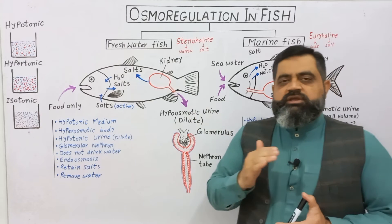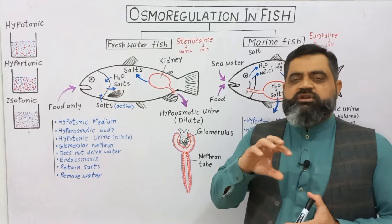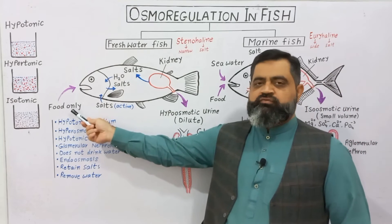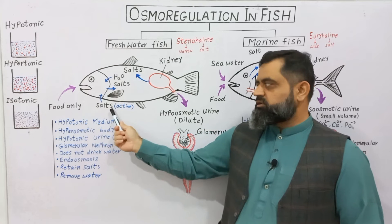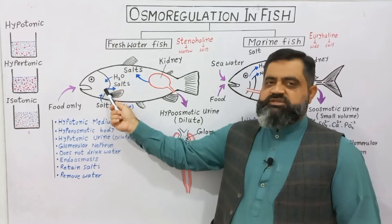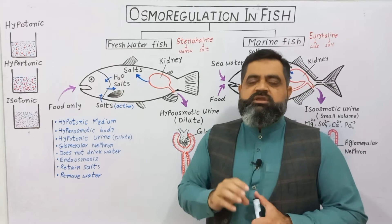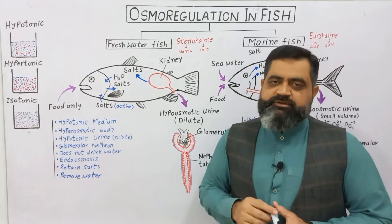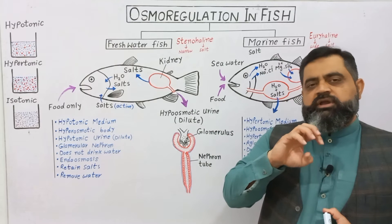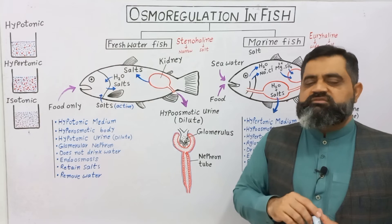Along with the urine there is some loss of ions. This ion loss can be compensated by food which contains some salts, and also by active transport of salts through the gills into the blood, so that salts can be compensated. According to these adaptations, these fish are able to survive in fresh water.